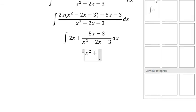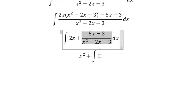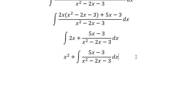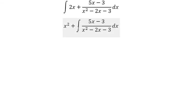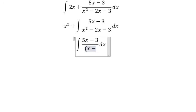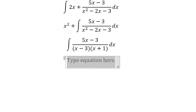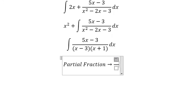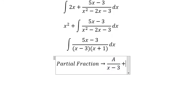Now I will concentrate on this remaining fraction. We need to do factorization here. Next we use partial fraction, so we put A over (x - 3) plus B over (x + 1).